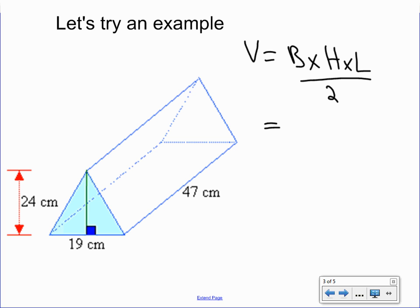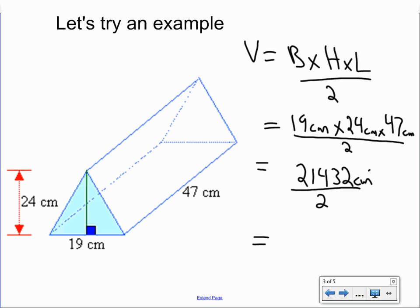So in this particular example, we have our base 19 centimeters times our height, which is 24 centimeters, times our length, which is 47 centimeters. Perfect. And we can do this in our calculator. I almost forgot to divide it by 2. That's pretty important. Divide it by 2, so we have 19 times 24 times 47, and that is equal to 21,432 divided by 2, and this is going to be centimeters cubed because we're timesing 3 centimeters, divided by 2, and we get a total volume of 10,716 centimeters cubed. So that's a pretty big triangular prism here.